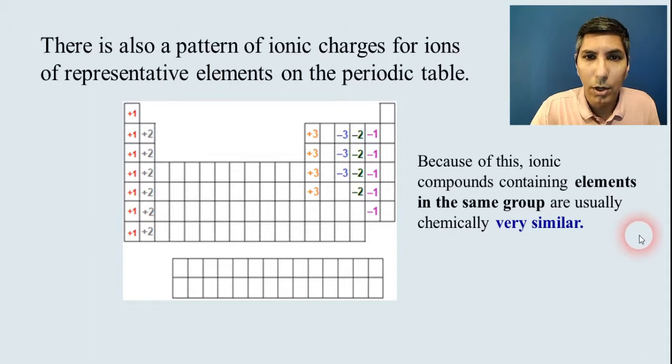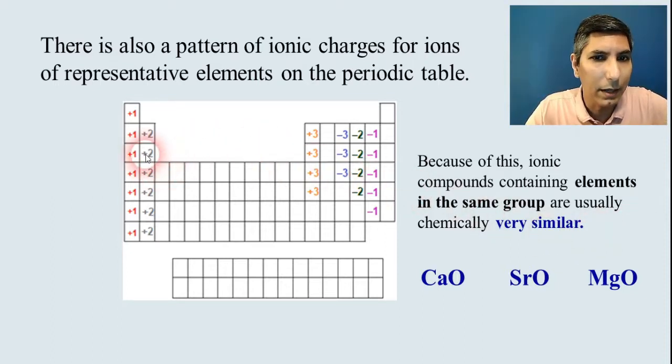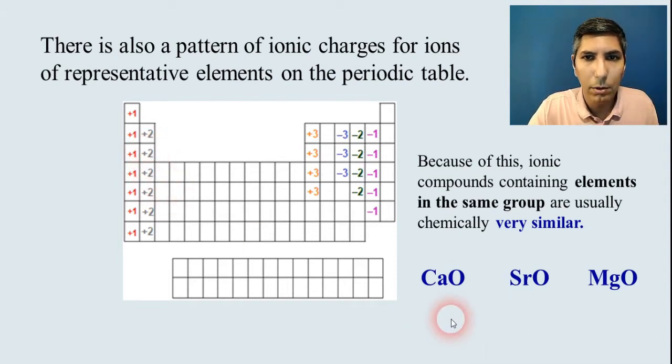they're often going to make compounds that behave very similar to each other. So for example, if we think of group 2 oxides, I just chose three of these here kind of at random. We have calcium and magnesium and strontium oxides here. All three of those metals are in group 2. And if you look at these three solids, chemically, they're actually rather similar to each other. Now, of course, there are some differences, and we'll talk about that as we move through this course.